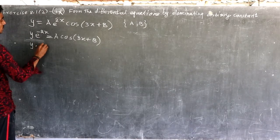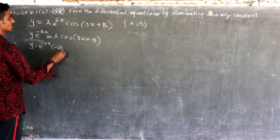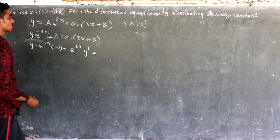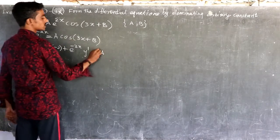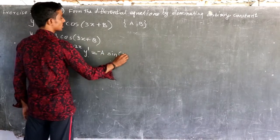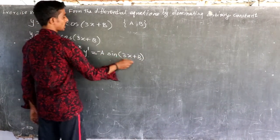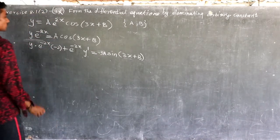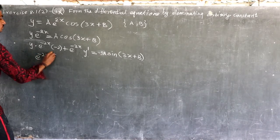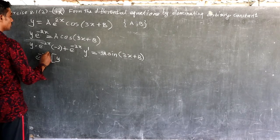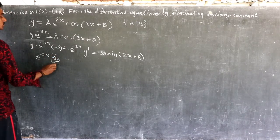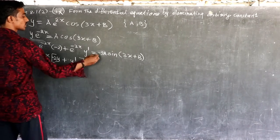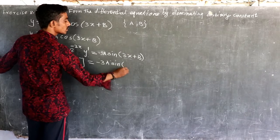e^(-2x) into minus 2, plus 2 e^(-2x). y dash equals a constant: cos minus sine bracket 3x plus b, 3x equals 3. So 3 equals 3a minus 3a. Then 2 times e^(-2x) y, minus 2y plus e^(-2x) y dash equals the same: minus 3 sin(3x) plus b.